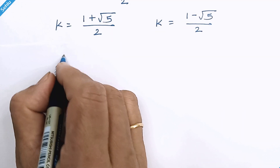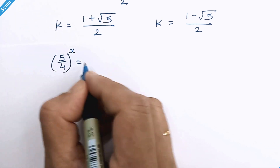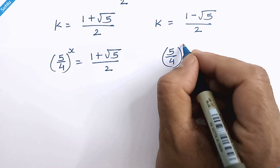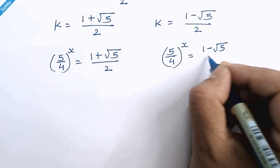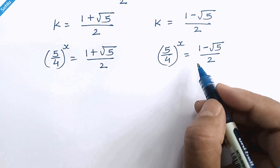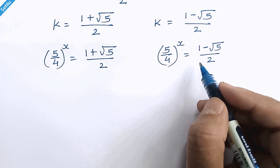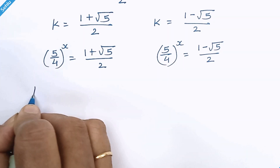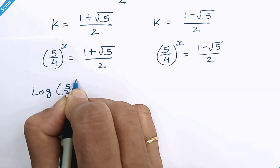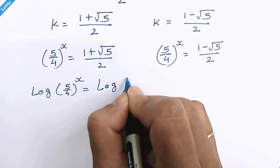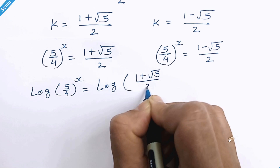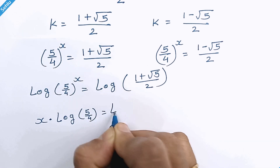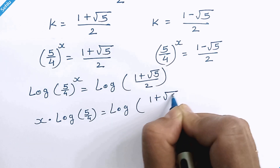Now k was taken for 5 over 4, whole raised to x. We will not use the negative value because the result will be negative and lead to an imaginary result. So we follow the positive path and take log: log of 5 over 4, whole raised to x, is equal to log of 1 plus square root of 5, over 2. This gives x times log of 5 over 4 is equal to log of 1 plus square root of 5, over 2.